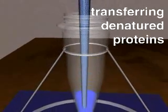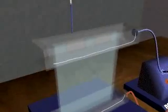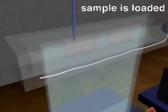The mixture of denatured proteins is then transferred from the tube and loaded into a well that has been cast in the top of a polyacrylamide gel.